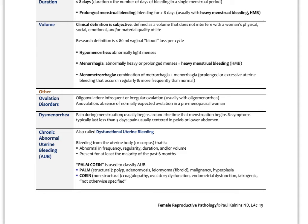Ovulation disorders: oligo-ovulation would be infrequent or irregular ovulation, usually associated with oligomenorrhea. Anovulation would be absence of normally expected ovulation in a premenopausal woman, often associated with amenorrhea. Dysmenorrhea is pain during menstruation, usually beginning around the time that menstruation begins, with symptoms typically lasting less than three days, and pain centered in the pelvis or lower abdomen. Chronic abnormal uterine bleeding, or AUB, also called dysfunctional uterine bleeding, is bleeding from the uterine corpus that is abnormal in frequency, regularity, duration, or volume, and is present for at least the majority of the last six months.